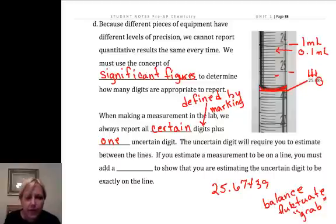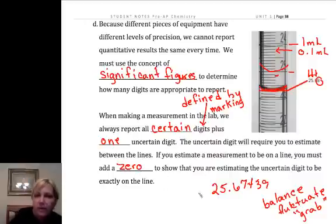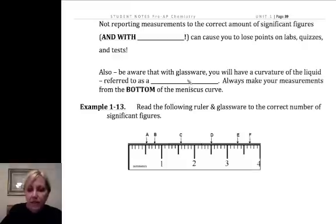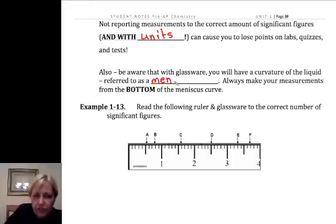If you think the bottom of the meniscus is dead on that line, well you're estimating that it's dead on that line and you have to add a zero. Always one more than what the line defines. Not reporting measurements to the correct amount of significant figures and with units can cause you to lose points in labs and tests. Also beware that with glassware, you will have a curvature of the liquid referred to as a meniscus. Always make your measurements from the bottom of the meniscus curve.